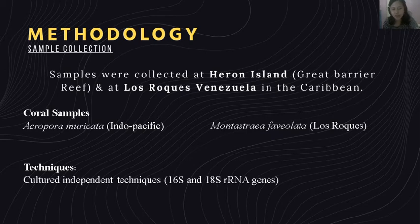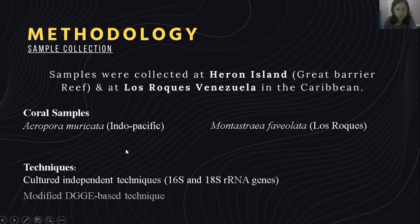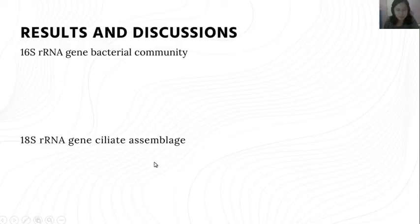The techniques used for analysis were culture-independent techniques involving 16S and 18S rRNA genes, used to examine bacterial and ciliate communities associated with microbial communities in coral and algal samples. They also used a modified DGGE — Denaturing Gradient Gel Electrophoresis — which is a sequence-based technique to detect dominant members of microbial communities.